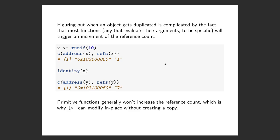So applying pretty much any function to a variable will increase the refs count and trigger a copy the next time you try to modify it. How to avoid that? Primitive functions generally won't do this — they essentially go directly into C code. Only core R members can create primitive functions. They know exactly what these functions are doing, so they can do special tricks so they know they don't need to increase the ref count.